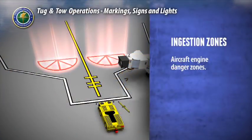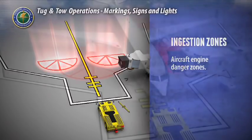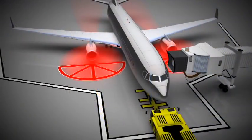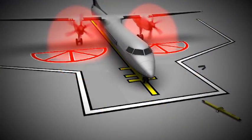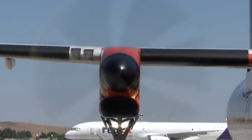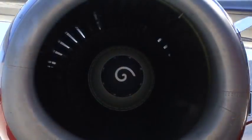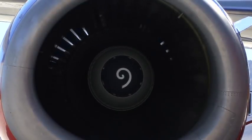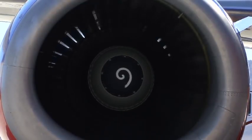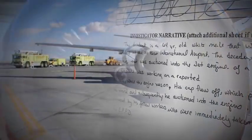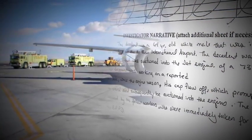Aircraft engine ingestion zones are indicated by red slashed half circles, which represent the front of the engine's intakes or propellers. This is an extremely dangerous area when the aircraft engines are running. Extreme caution and awareness are necessary when an aircraft engine is running even at idle. The consequences of entering this area can be deadly.